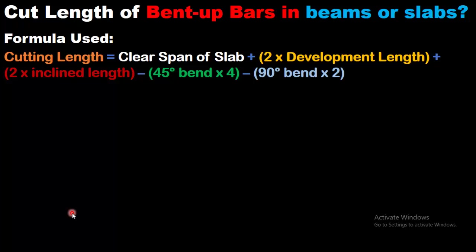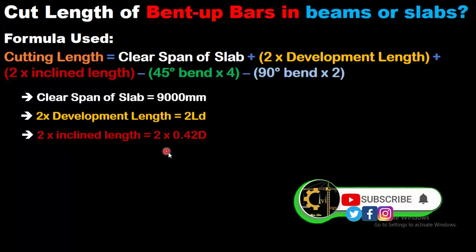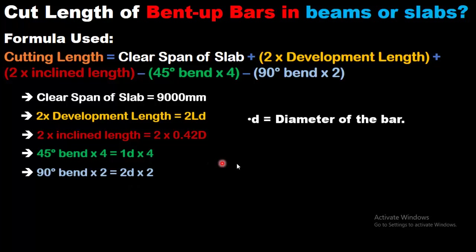There are a few shortcuts to write this formula. The clear span is 9000 millimeters and development length is 2 times LD, provided at both ends of the beam or slab. Then there is 2 times inclined length — the inclined length of the crank bar — which equals 2 multiplied by 0.42 times capital D, where D will be discussed in the upcoming slide. There are 4 45-degree bends, and the bend deduction for a 45-degree bend is 1 times the diameter of the bar. There are 2 90-degree bends, and the bend deduction for 90 degrees is 2 times the diameter of the bar.